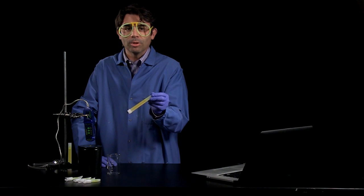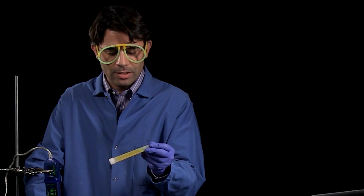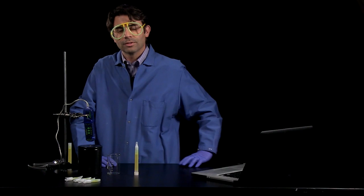Glow sticks are an example of a chemiluminescent process. That means the reactants react to produce energy in the form of light. We're going to study that light using our light level sensor.